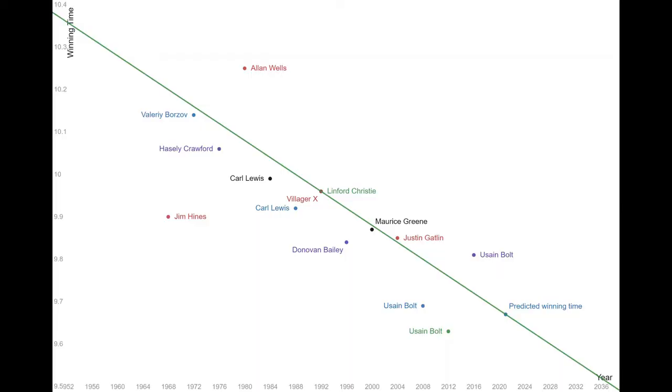I predict that for the Tokyo Olympics the winning time for the men's 100 meter race will be 9.67 seconds and my bet is on Noah Lyons.